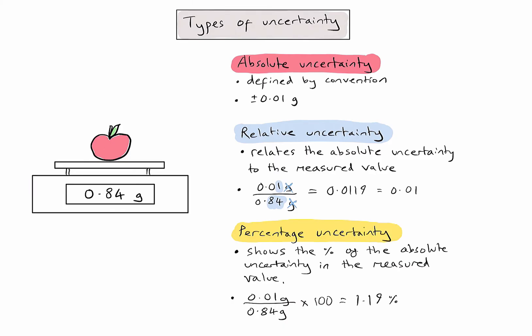As with relative uncertainty, because I am using two experimental values in a multiplication or division calculation, I need to consider the smallest number of significant figures in my calculation. There is one significant figure in the top value, two in the bottom value, and the 100 doesn't matter because it's not one of our experimentally measured values.